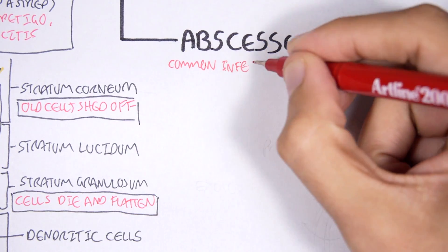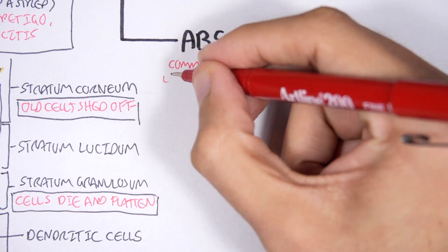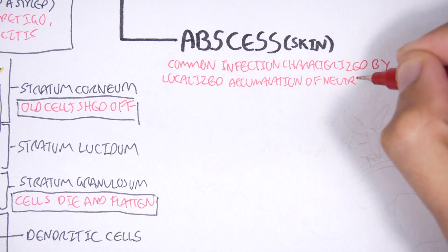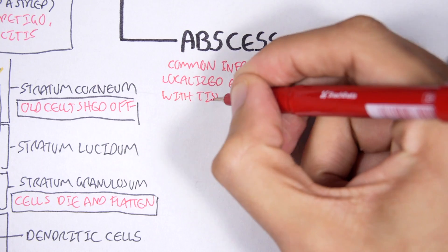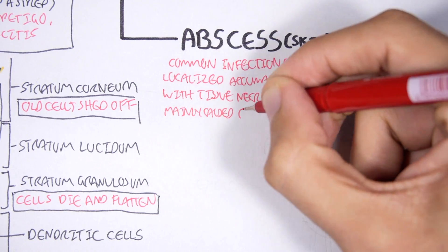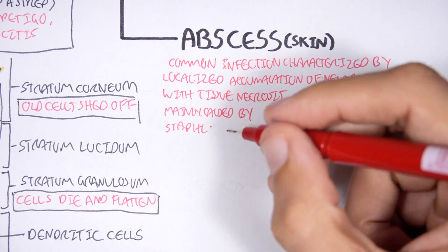So an abscess is a common infection characterized by localized accumulation of neutrophils with tissue necrosis, and it's mainly caused by the bacteria Staphylococcus aureus.